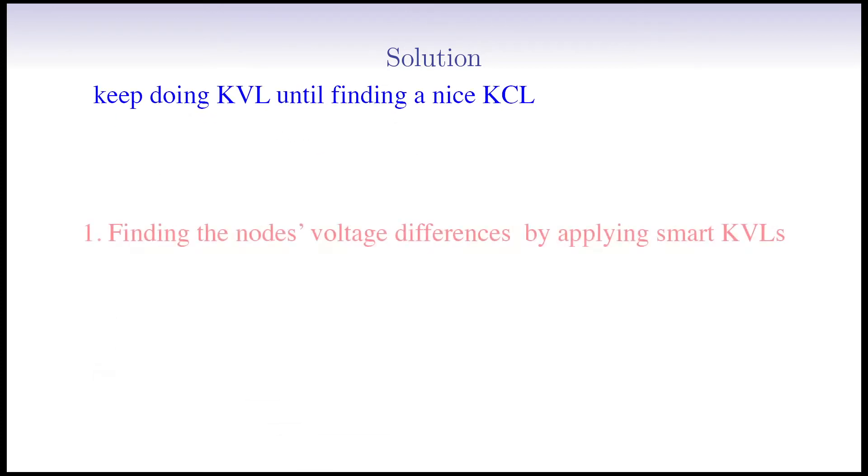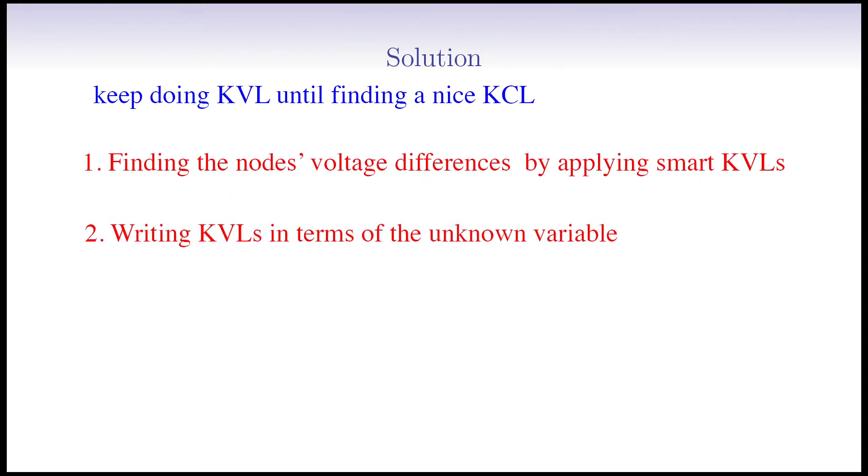Let's see how we can do this method. First, we apply some smart KVLs in some branches to find out the voltage difference between nodes. Second, we try to write the KVLs in terms of the lowest number of possible unknown voltage. It'll be very efficient if we only keep one unknown variable. So for more convenience, we set one of the nodes to the zero voltage, and we find the voltage of other nodes with respect to the zero voltage node.